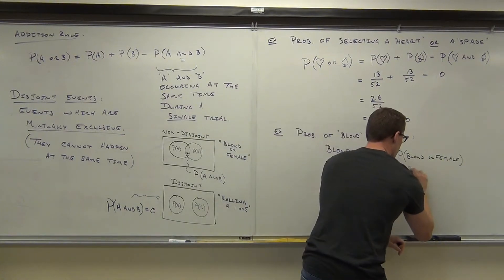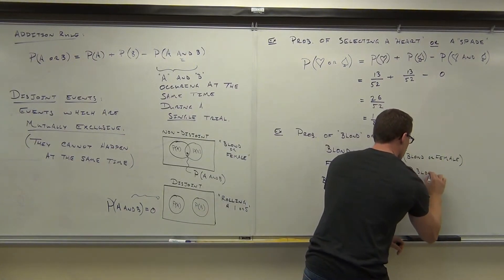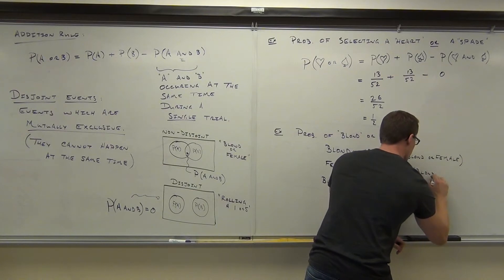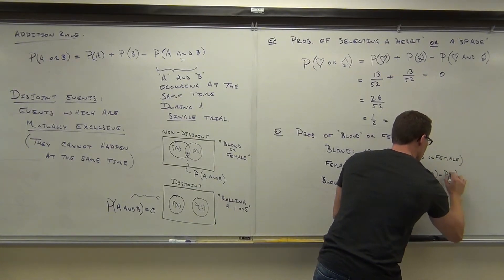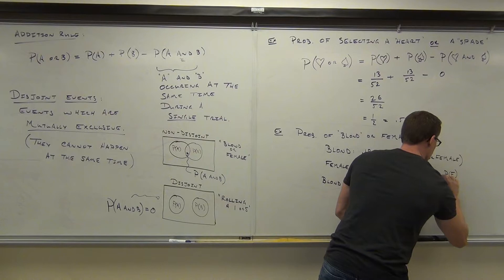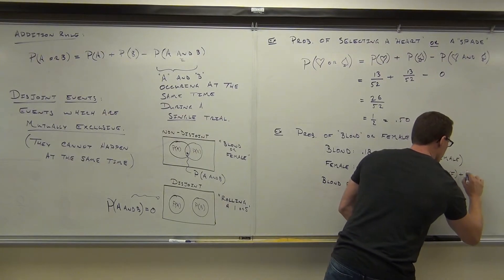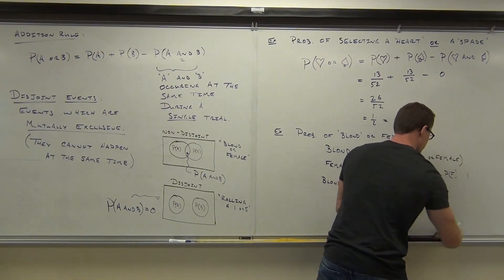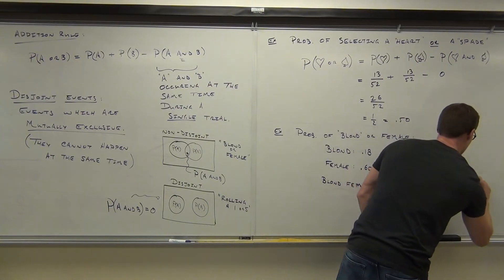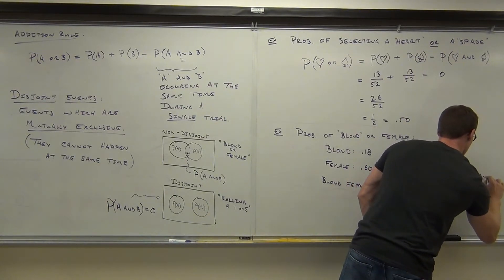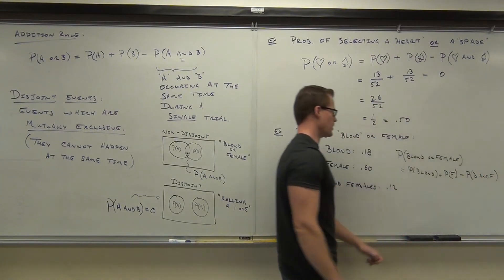So this would equal the probability of blonde, plus the probability of being female, minus the probability of being... blonde and female.